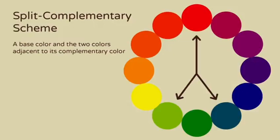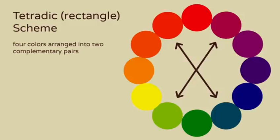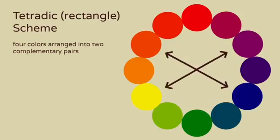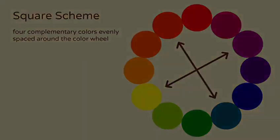A split complementary color scheme is made up of a base color and the two colors adjacent to its complementary color. A tetradic color scheme is made up of four colors arranged into two complementary pairs. And a square color scheme is made up of four complementary colors evenly spaced around the color wheel.